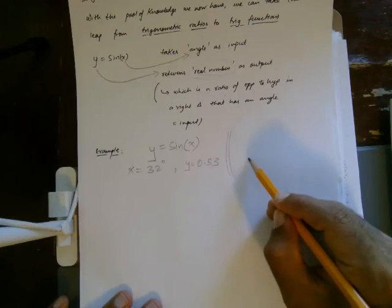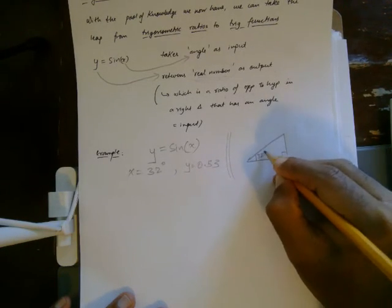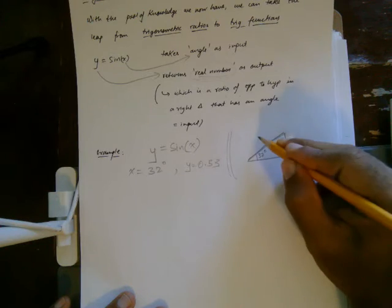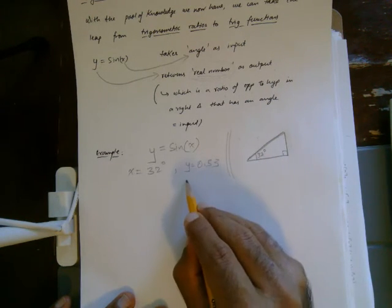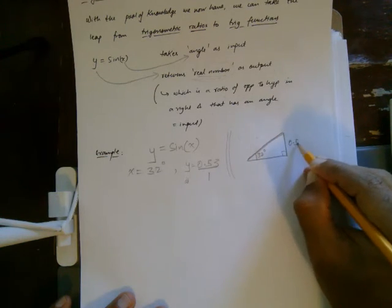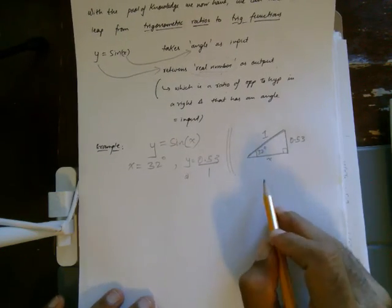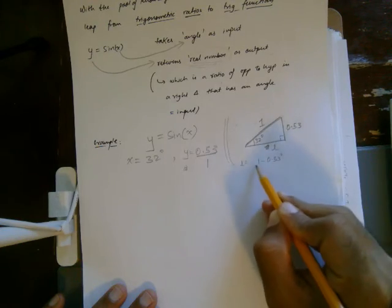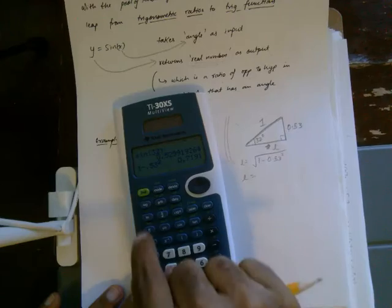What this is really saying is: if you take any right triangle with one angle equal to 32 degrees and measure the opposite and hypotenuse, their ratio will be exactly 0.53. Think of this as a triangle with opposite side 0.53 and hypotenuse 1. Then the other leg L equals the square root of 1 minus 0.53 squared, using Pythagoras.